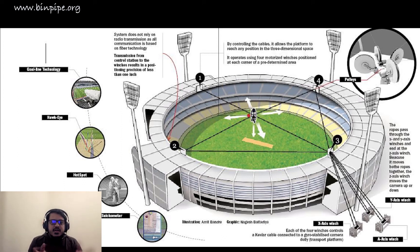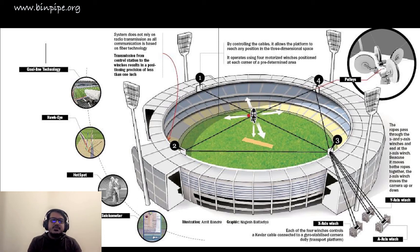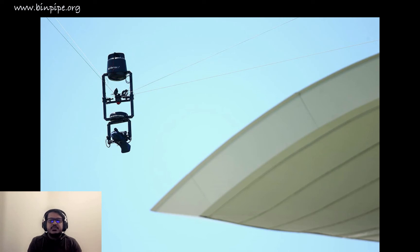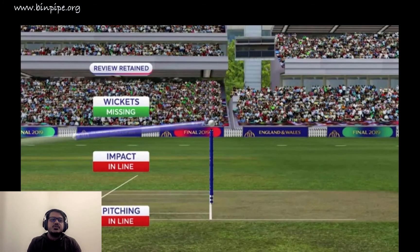Run-out cameras, also known as third umpire cameras, are very crucial for decision making. They are placed six to eight meters above ground level and 20 to 25 meters from the perimeter rope. These are computerized cameras, not operated by humans. The final broadcast camera is controlled by an authentic director and producer for recording and distribution of cricket match activity.